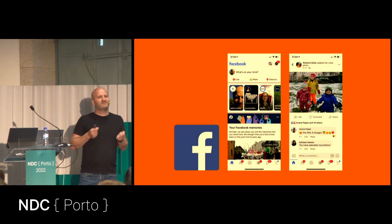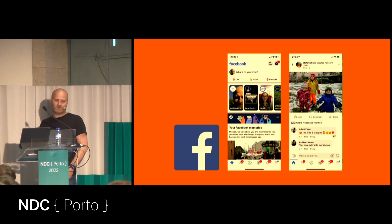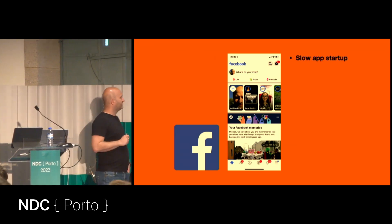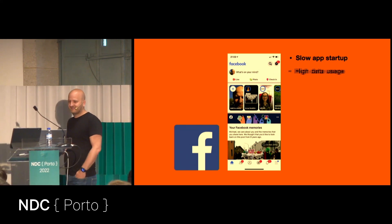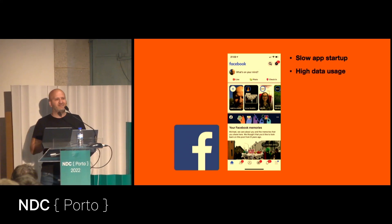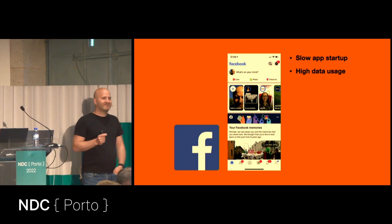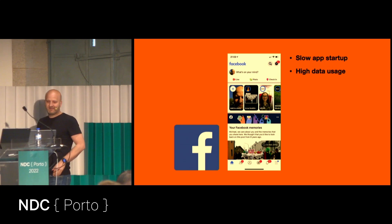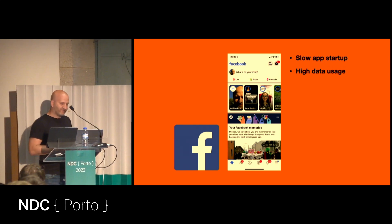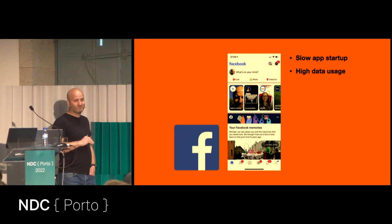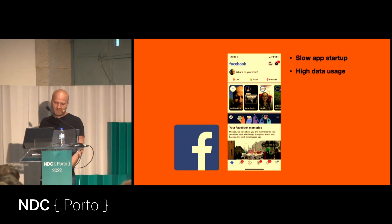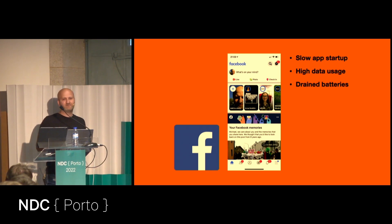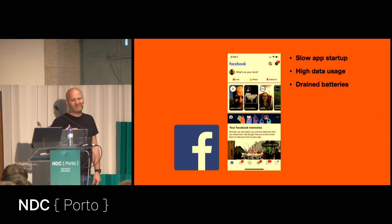When people started using their application, they were quite upset because the first Facebook applications were really, really slow and used a lot of data. Back then, if you remember, data was precious — we had maybe 500 MB data plans, and the Facebook apps would run through that in a couple of days. Also, the applications used a lot of battery and your phone would get really hot.